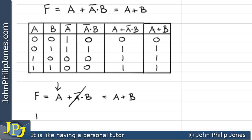The previous video showed us a related identity: if F equals A OR A AND B, then A is by itself, and that knocks out all of A AND B, so it becomes just A. These are quite useful identities we can apply to various Boolean algebra expressions.